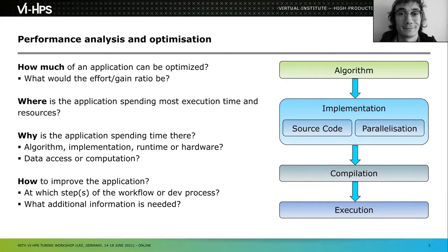In general, when you start, you begin with an algorithm that you'll turn into an implementation using a programming language and certain parallel paradigms — maybe MPI, OpenMP, shared memory versus distributed memory. Then once you finish the development process, you compile your program and obtain a binary file — an executable that you run on the machine to do the problem-solving tasks it was meant to solve.